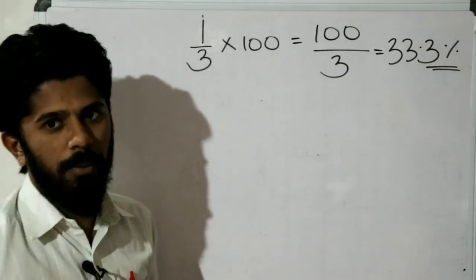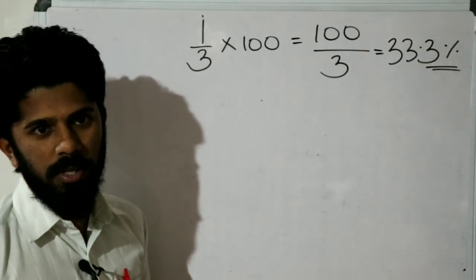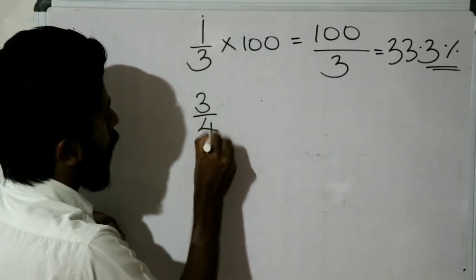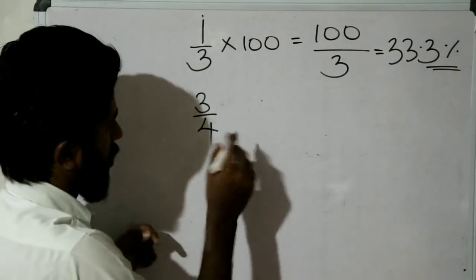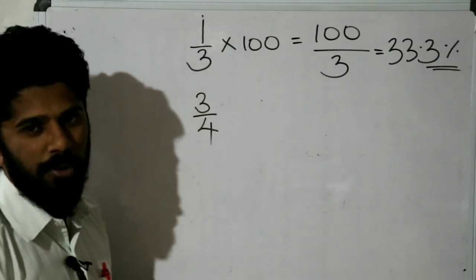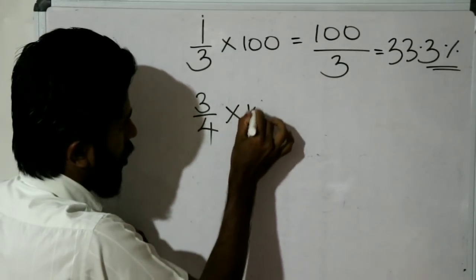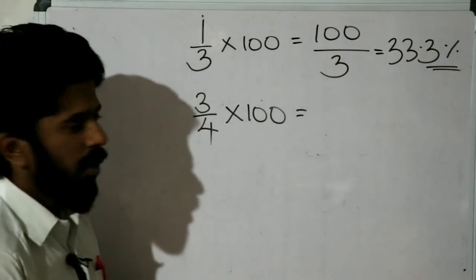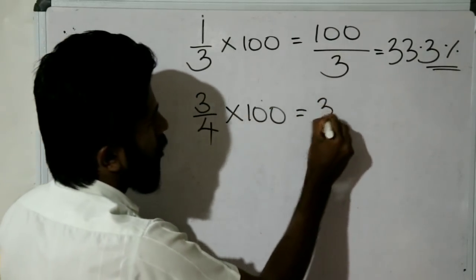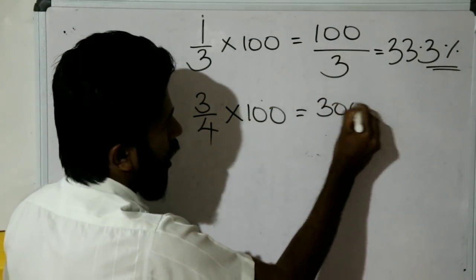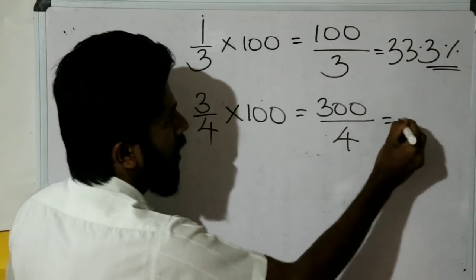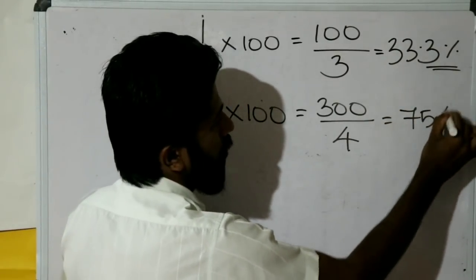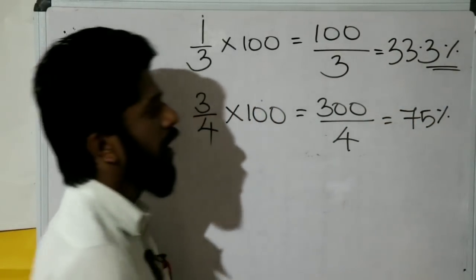Next question: 3/4 as a percentage. 3/4 into 100 is equal to 300 divided by 4. Therefore the answer is 75 percentage.